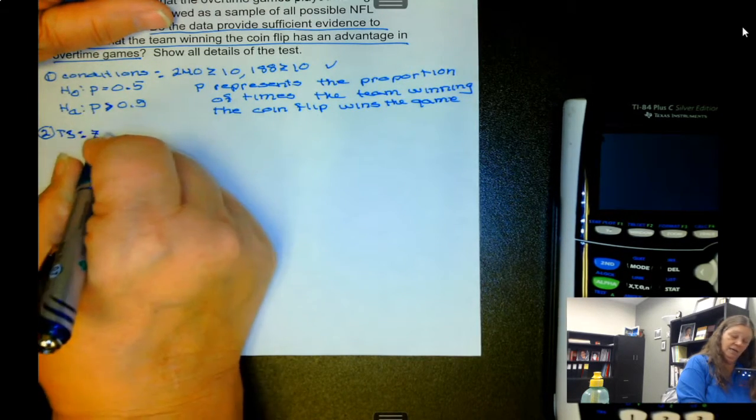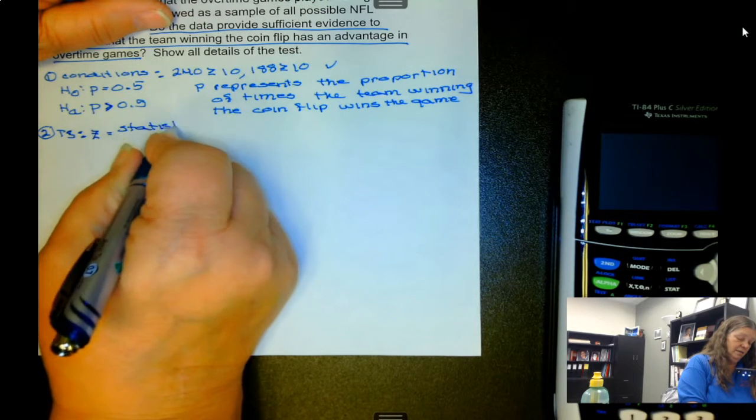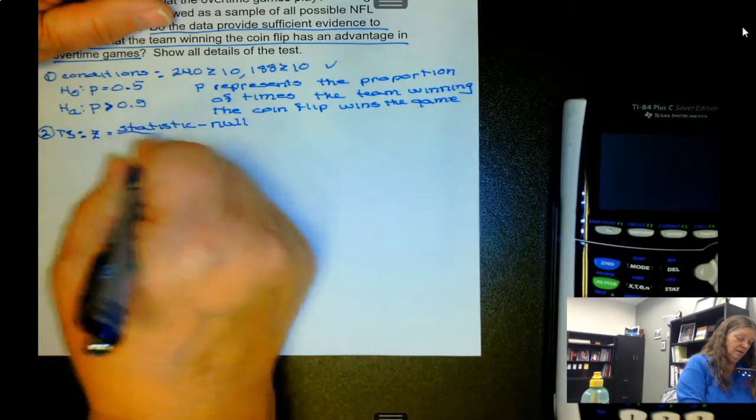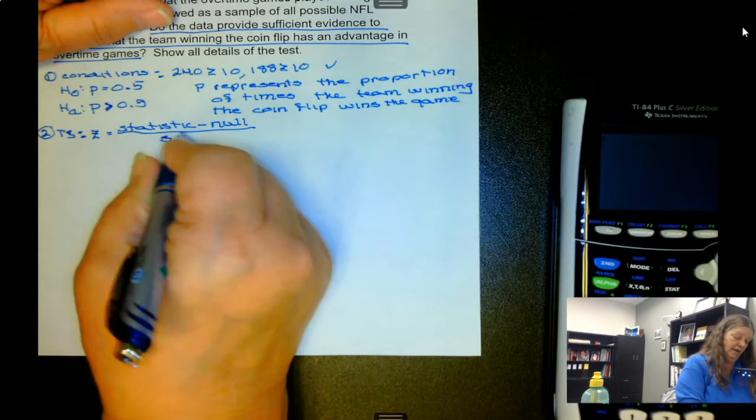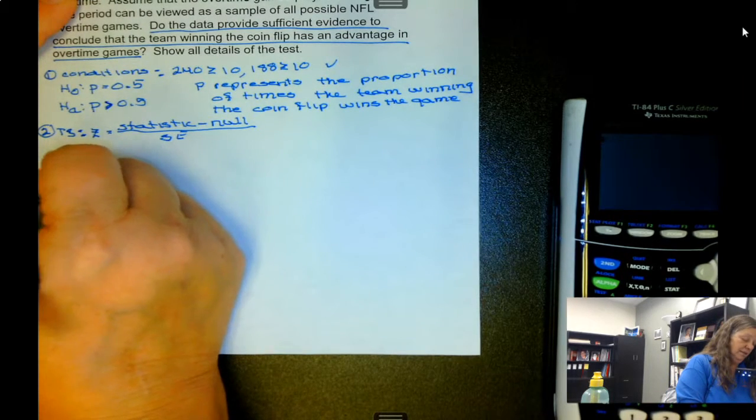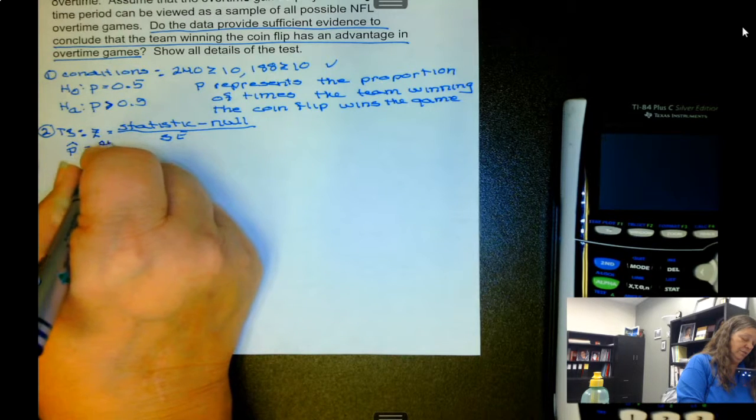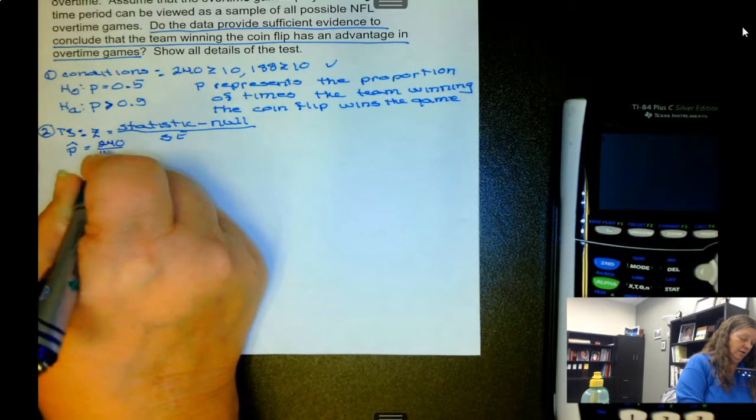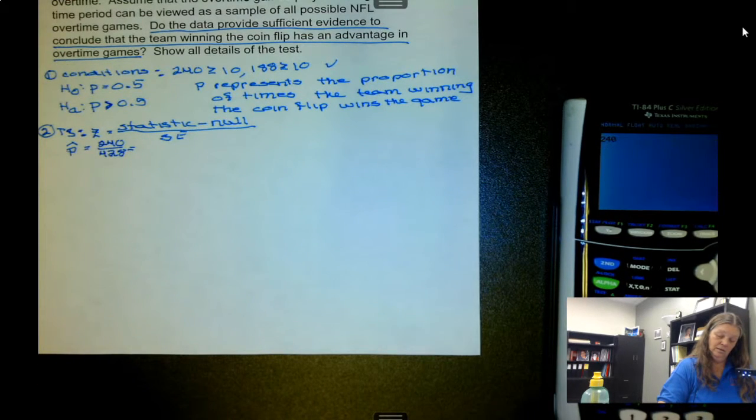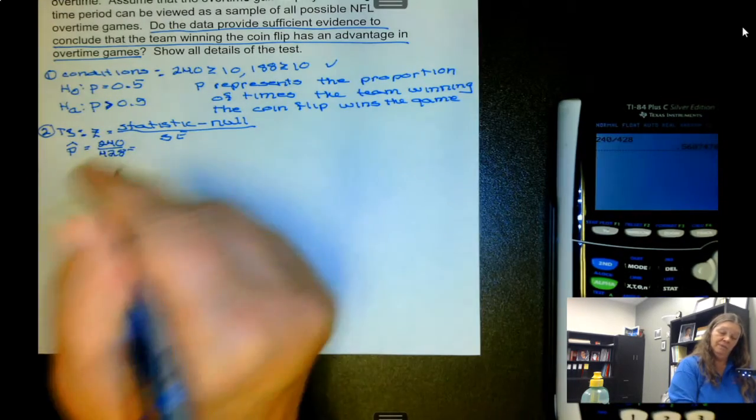The test statistic is the statistic minus the null over the standard error. In this case, the statistic is 240 over 428, which is 0.561.